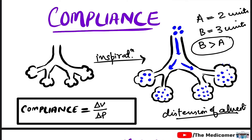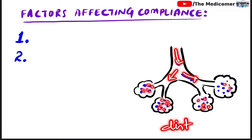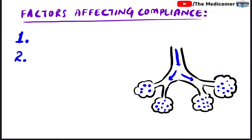Here is the alveoli, and after inspiration these are the gas molecules that have entered, resulting in distension of the alveoli. Now, what are the factors that actually affect compliance — what factors cause this distension and what factors oppose it? There are two main factors. The first is elastic recoil.